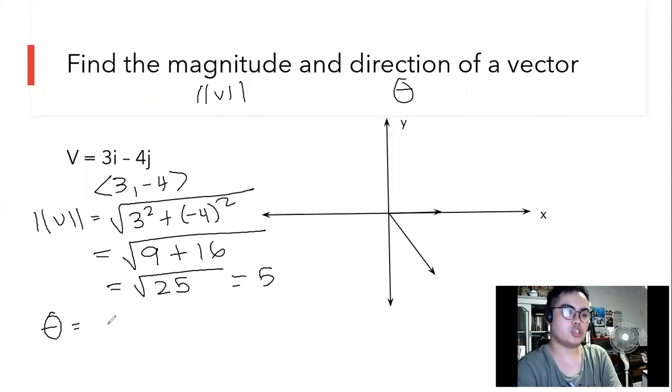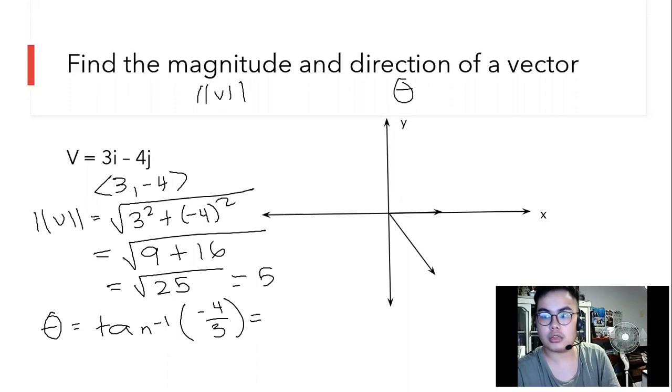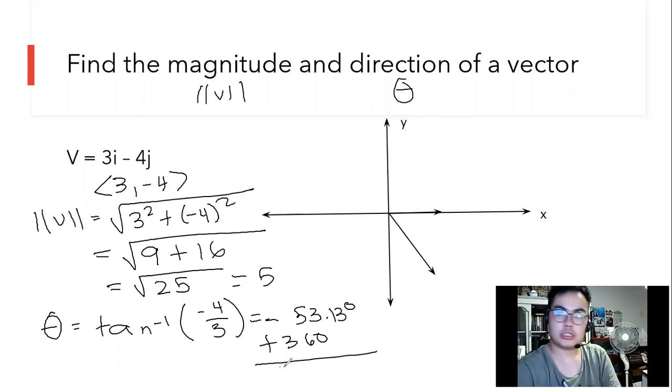For the direction, we look for the inverse of tangent of negative 4 over 3. What tool we're going to use is the scientific calculator. It's negative 53.13 degrees approximately. Since this lies in the 4th quadrant, we shall add with 360. Therefore, the answer is 306.87. That is the direction of this vector and that is the magnitude of this vector.